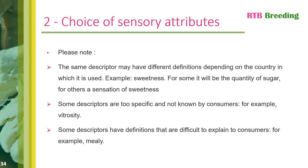It's important to note that sometimes the same descriptor can have different definitions depending on the country in which it's used. For example, the sensory attribute sweetness may be defined as the amount of sugar in the food for some, or as a sensation of sweetness for others. It's also possible that certain descriptors are too specific and unfamiliar to consumers — vitrosity, for example. Care must therefore be taken to choose words that all naive consumers can understand. Finally, some descriptors have definitions that are difficult to explain to consumers, such as milliness.